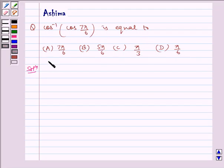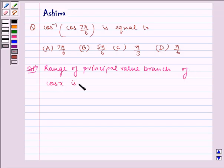Now let us write the solution. We know that range of principal value branch of cos x is 0 to π and 7π by 6 does not belong to 0 to π.